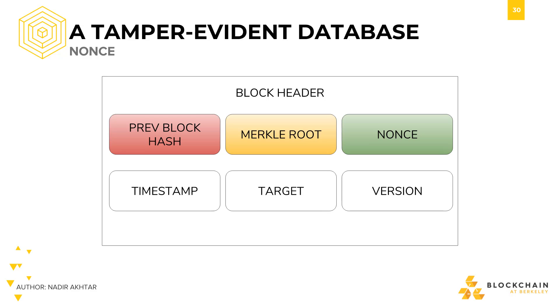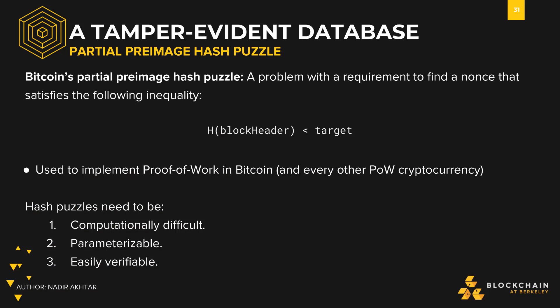Now that we've finished talking about how previous block hashes chain together, let's talk about the nonce, the physical manifestation of proof-of-work. Keep in mind that we need entities to prove that they've done some work before they're allowed to submit a vote to the network, meaning that we have to design a problem or puzzle for their computers to solve to prove that they've done work.